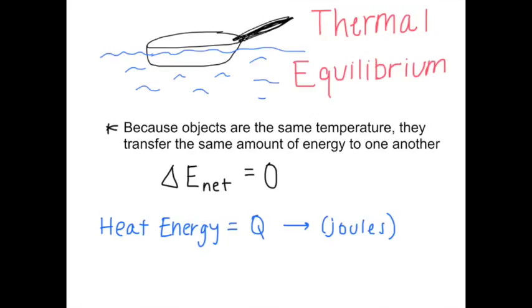Once the pan and the water have reached thermal equilibrium, in other words if their temperatures are identical, they start to transfer equal amounts of energy back and forth to one another. Because the objects are the same temperature and they're transferring the same amount of energy to one another, the net change in energy, which I've written as delta E net, is equal to zero.